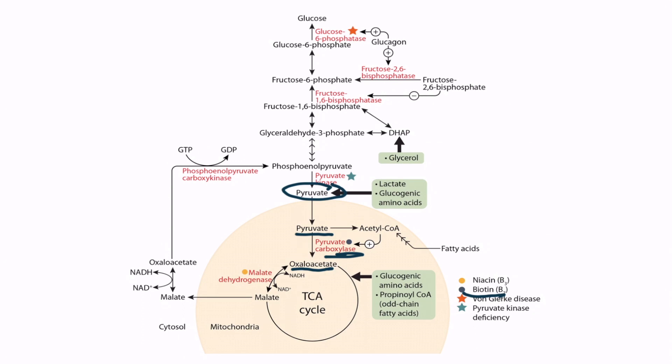We discuss this in detail in the section on pyruvate metabolism, but recall that pyruvate carboxylase is tightly regulated by acetyl-CoA. Gluconeogenesis occurs in the liver primarily when the body is fasting. Under these conditions, the acetyl-CoA levels must be high, thereby activating pyruvate carboxylase.